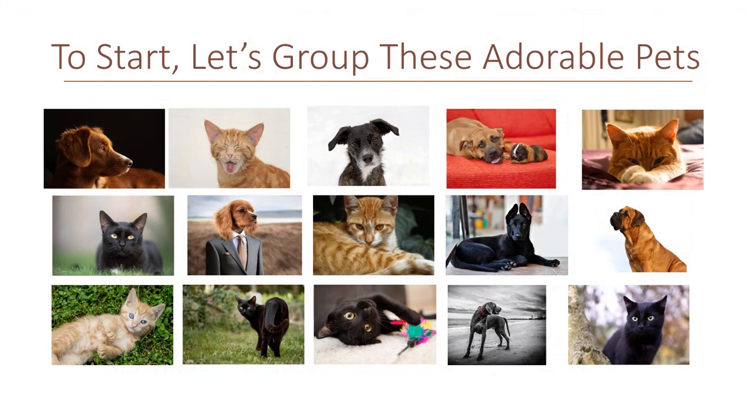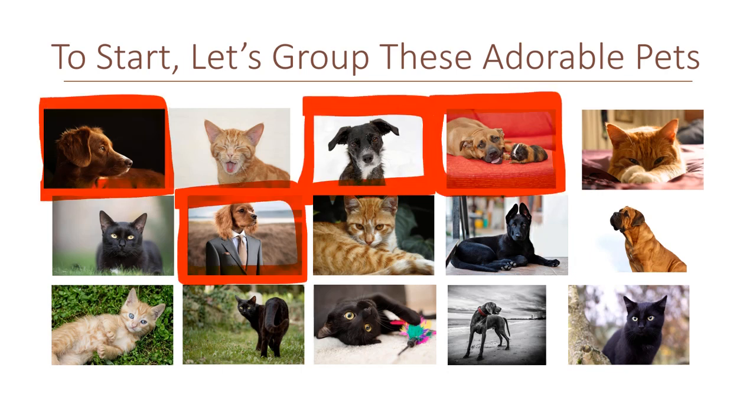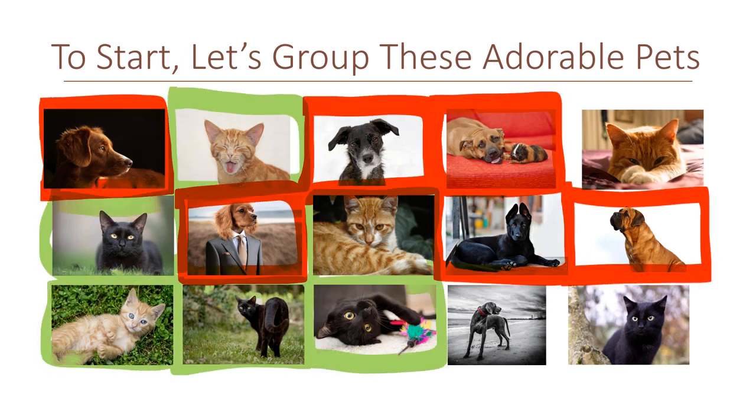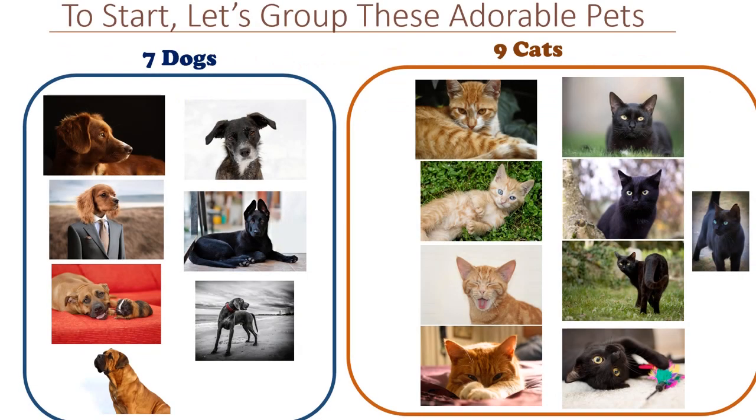Before we get started, let's construct our 2x2 table. We will do this by grouping these pets. The most natural way first might be into cats and dogs. We have 7 dogs and 9 cats.